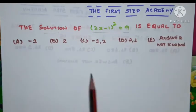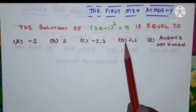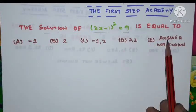Given options are: option A minus 1, option B 2, option C minus 1 comma 2, option D 1 comma 2, option E answer not known.